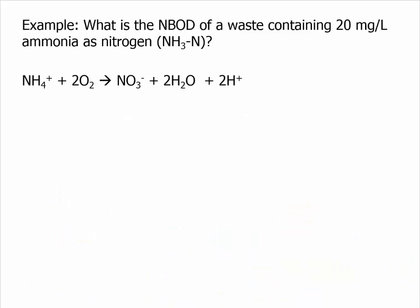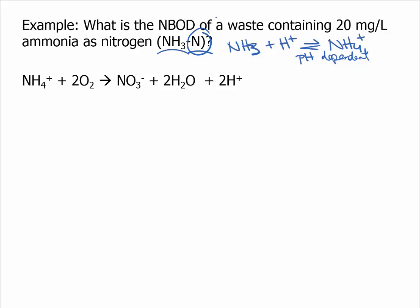In the next problem, I'm showing you an example of the nitrogenous oxygen demand that would be consumed from 20 milligrams per liter of ammonia as nitrogen. One thing to note is this unit — ammonia as nitrogen — is a common unit in environmental engineering because ammonia (NH3) combines with a proton to form ammonium, and this reaction is highly pH dependent. So that we don't have to measure ammonium and ammonia all the time, we typically just measure the nitrogen content as ammonia or ammonium. The reaction I show you is commonly referred to as nitrification.